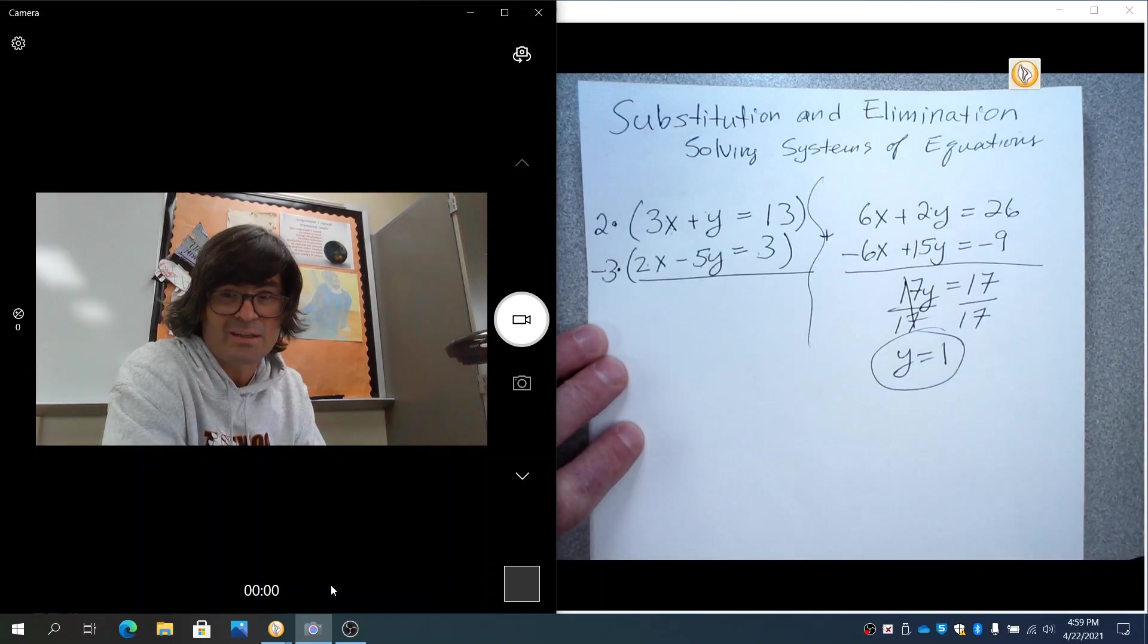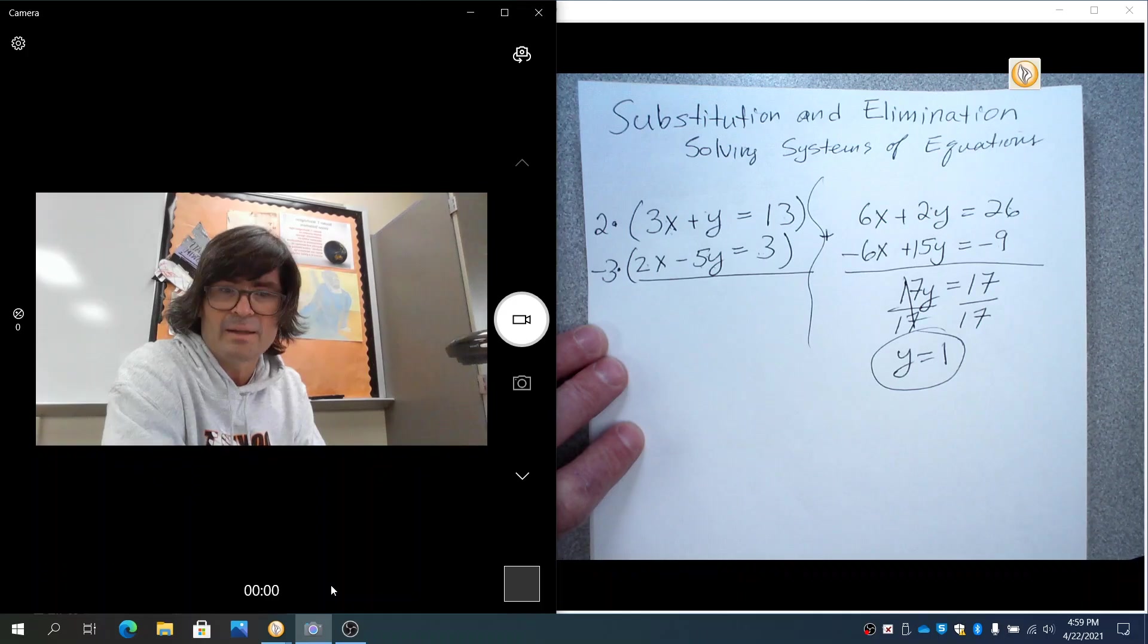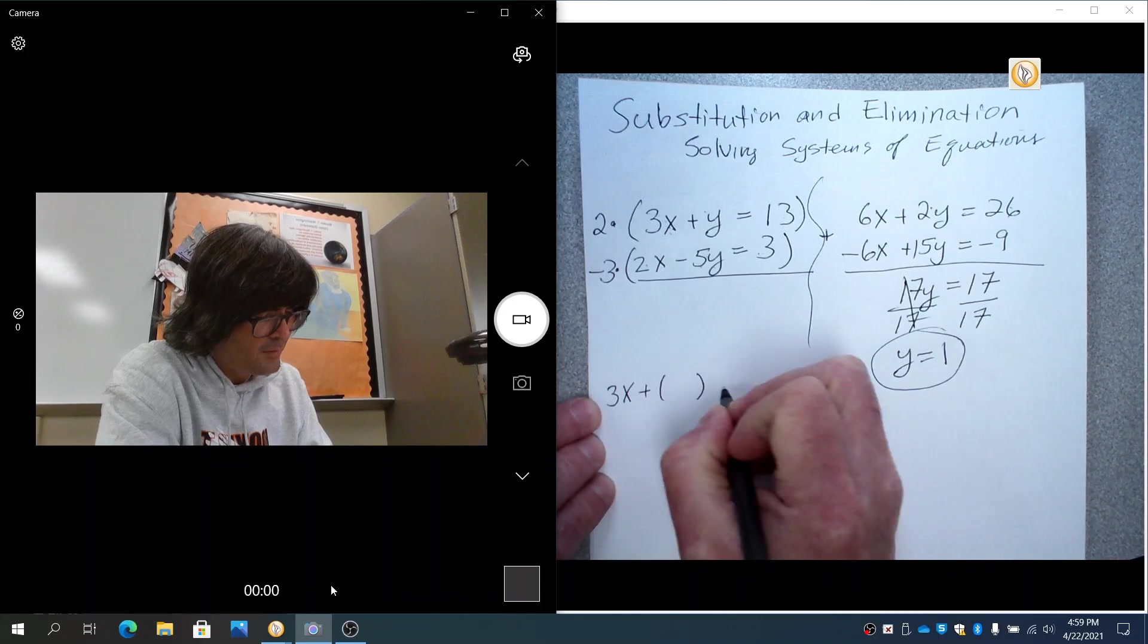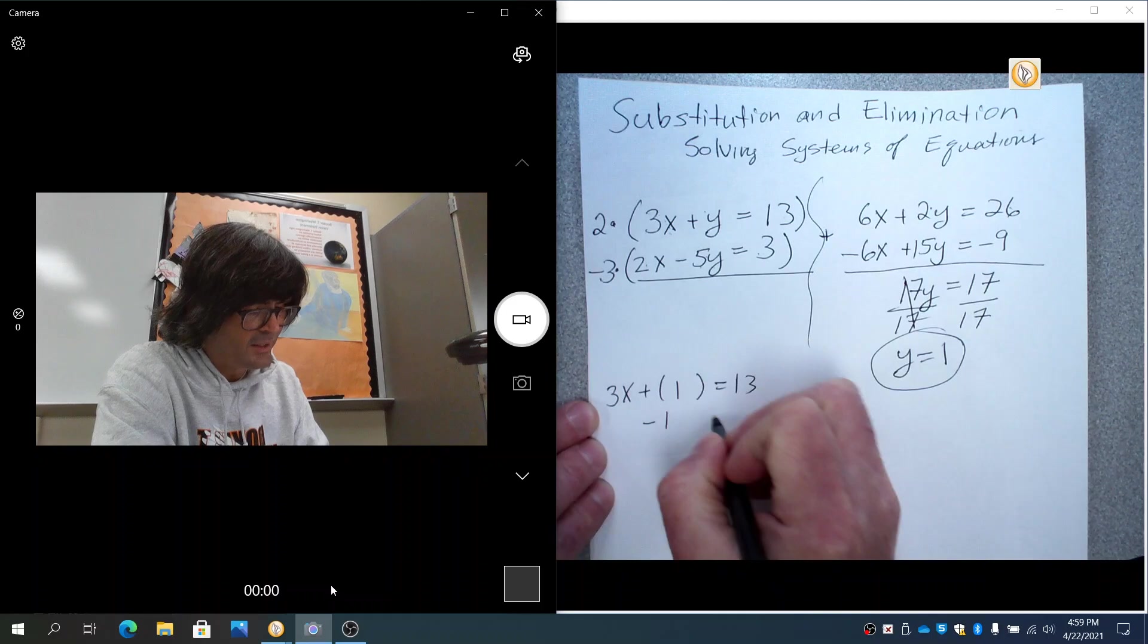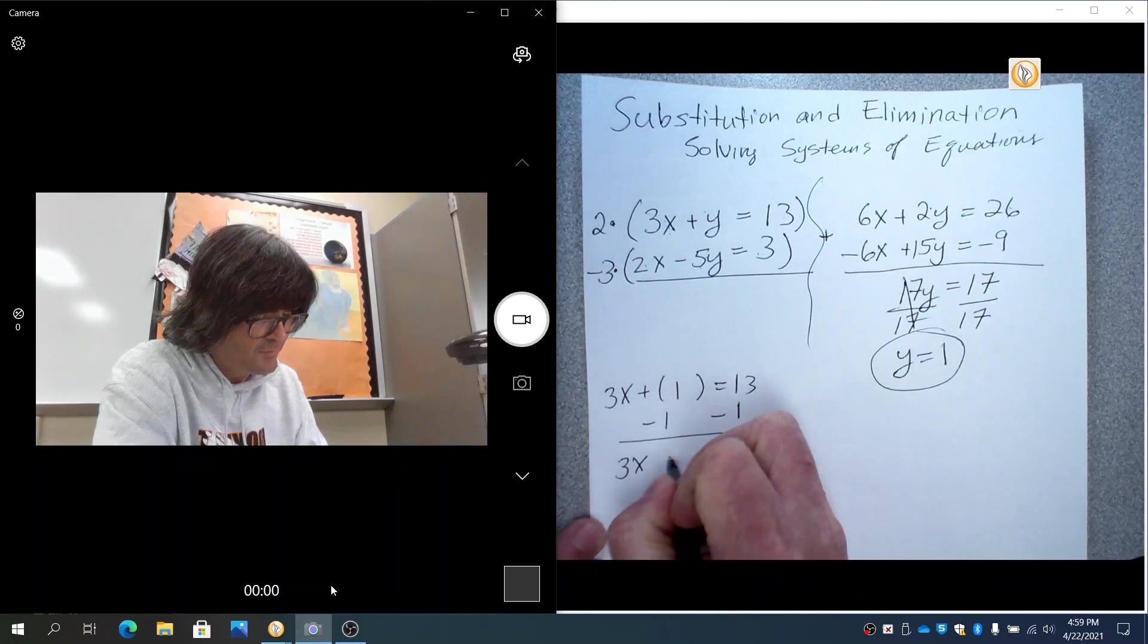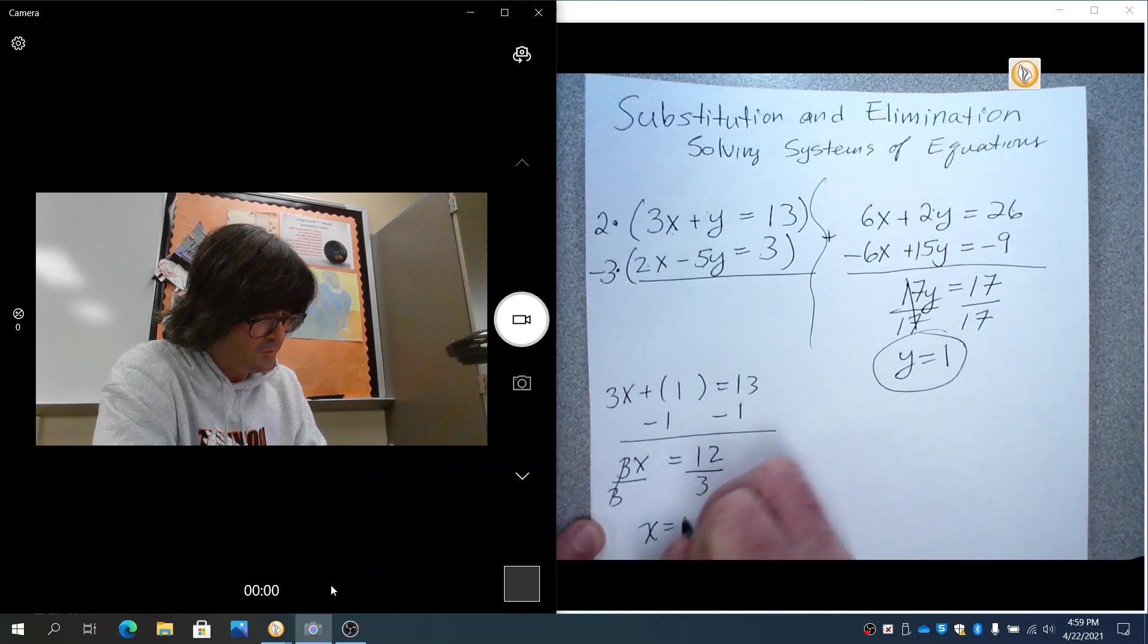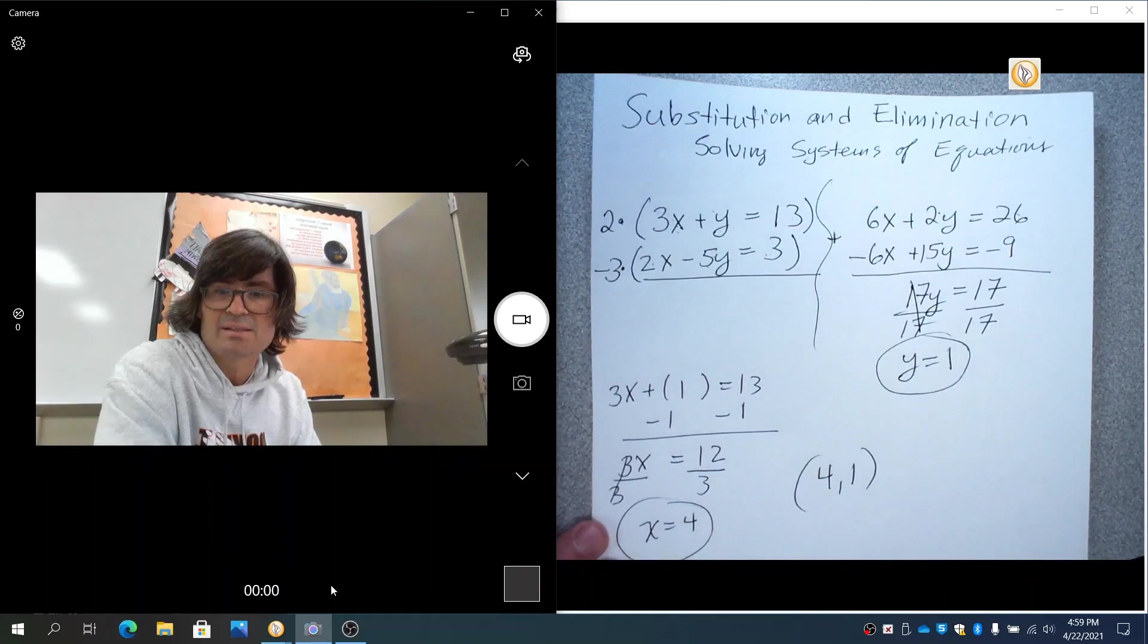So you're halfway there, but you've done the difficult half. All that you have to do now to get x is to take one of your original equations. It doesn't matter which one. I'll just pick the first one. Plug in the y as 1 and then solve for x. So I'm going to subtract 1 from both sides to get the x term by itself. 3x equals 12. And x equals 4. So 4, 1 is the ordered pair that would be the solution for this. That is elimination.